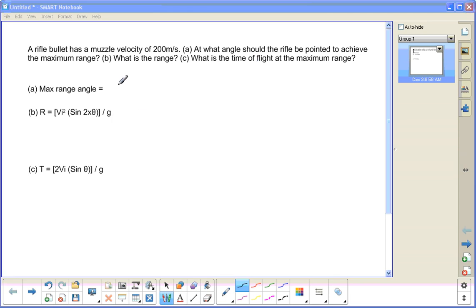This is number four on the projectile range problems worksheet. A rifle bullet has a muzzle velocity of 200 meters per second. A. At what angle should the rifle be pointed to achieve the maximum range? B. What is that range? C. What is the time of flight at the maximum range?